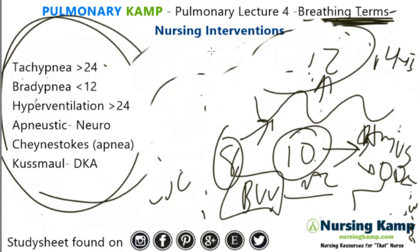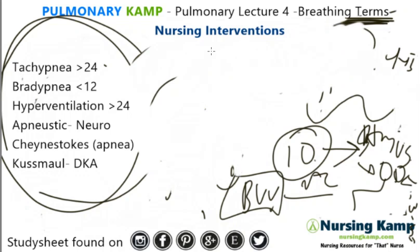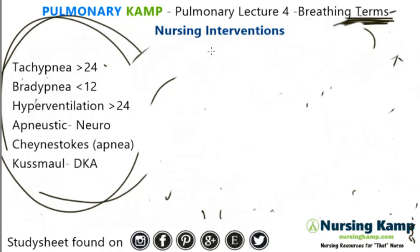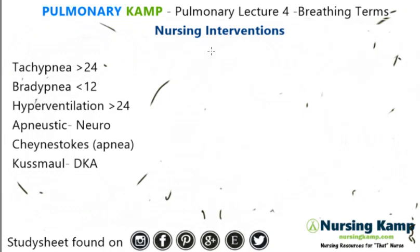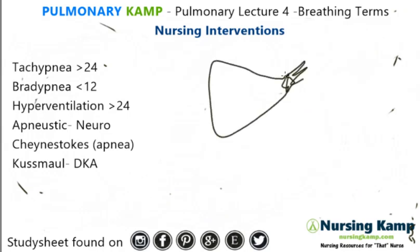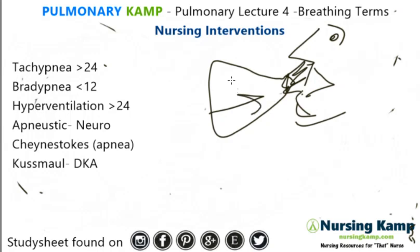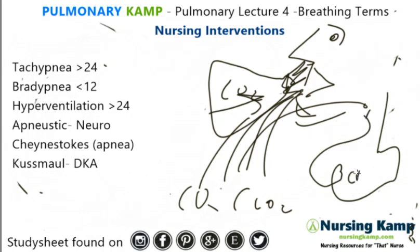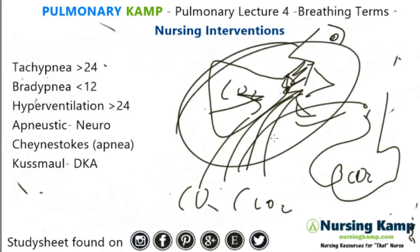Hyperventilation is an increased rate and depth of breathing. The problem is that it blows off CO2, and when you hyperventilate you can't quite catch your breath. A lot of times we give that person a paper bag to breathe into, because we want them to breathe their CO2 back in — they've exhaled all their CO2. The body needs that CO2 back in the lungs to keep the acid balance correct. That's hyperventilation, which I cover more in another lecture on nursing interventions.